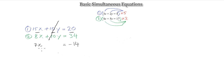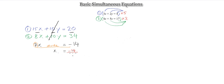Now we want to find the value of x. The 7 is multiplied with x, so when 7 goes to the other side to make x the subject, it divides. So x equals minus 14 divided by 7, which is minus 2. Literally straightforward — I've just got my x value.